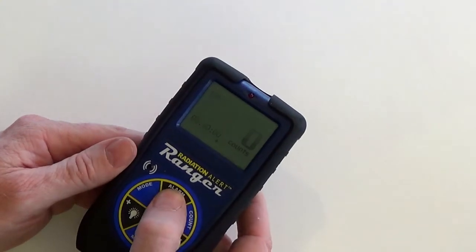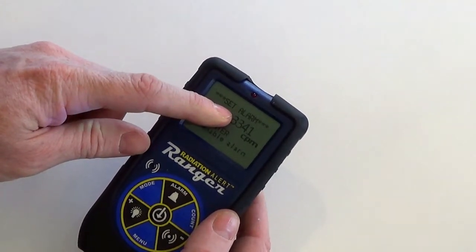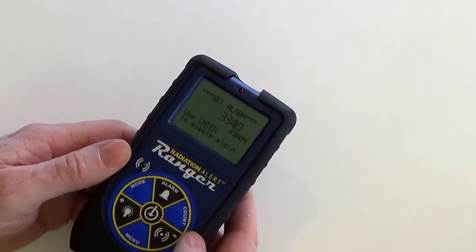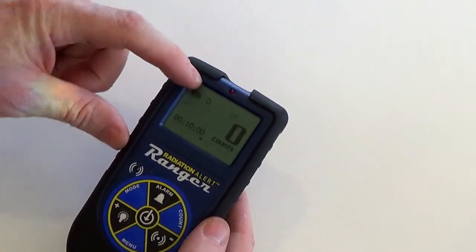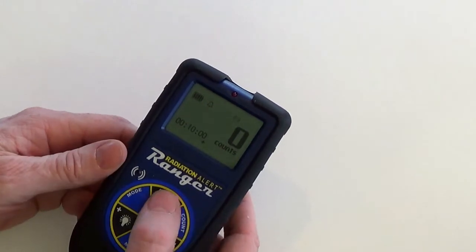To set the alarm, press the alarm button. The unit of measurement shown on the set alarm screen will reflect the unit of measurement chosen from the mode screen last. Use the plus and minus buttons to scale to the desired alarm level, and press enter. You'll now notice an alarm icon at the top of the LCD indicating that the alarm is on.